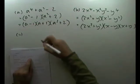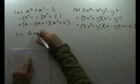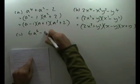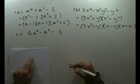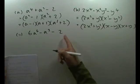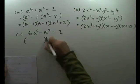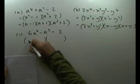C. C was a misprint on the sheets. C should have been 6a to the 6 minus a cubed minus 2. Still a quadratic. Only this time a quadratic in a cubed and a constant. So the factorization is going to be a cubed.